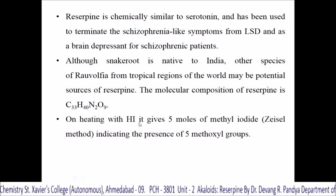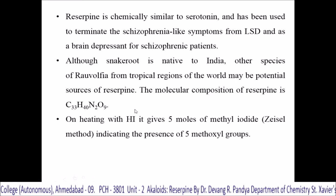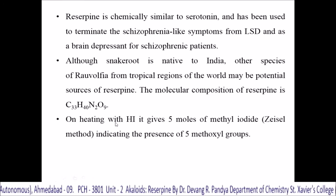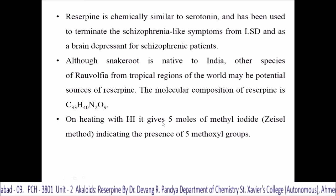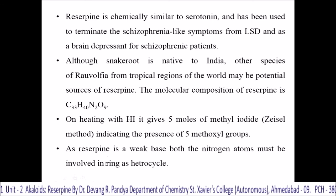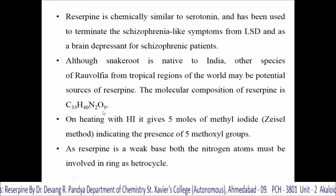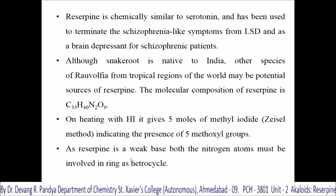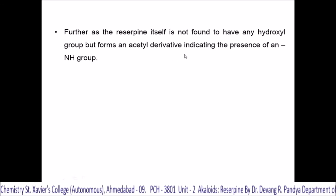On heating with hydroiodic acid, reserpine gives 5 moles of methyl iodide — the Zeisel method — indicating the presence of 5-methoxyl groups in this alkaloid. As reserpine is a weak base, both nitrogen atoms must be involved in the ring as part of a heterocyclic structure. One nitrogen is in a secondary and the other nitrogen is in a tertiary form. Reserpine is not found to have any free hydroxyl group but forms an acetyl derivative, indicating the presence of 1-methoxyl group.